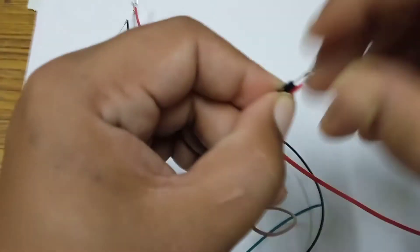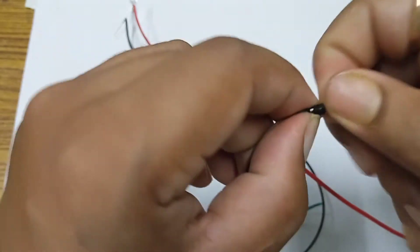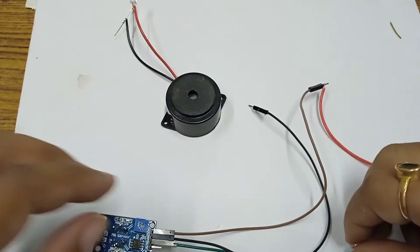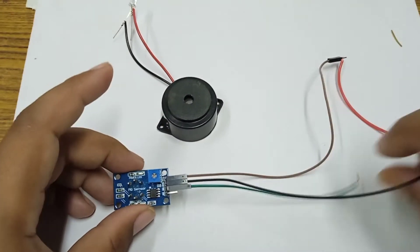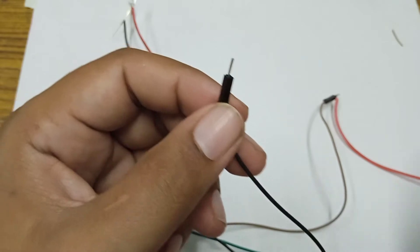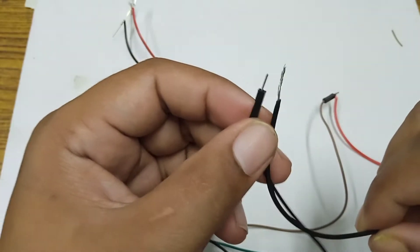I am connecting this VCC red wire to the plus 5 volts, and then we connect this black wire, that is nothing but the ground, to this negative terminal of the power supply.